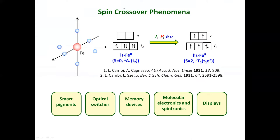The most interesting effect is demonstrated by ferrum iron in the octahedral field. The five d-orbitals of the electronic shell are split, and at low temperatures the electrons are paired and the spin of the metal iron is equal to zero. Under the action of temperature, pressure, or light, the iron switches to the high spin state with spin equal to two.